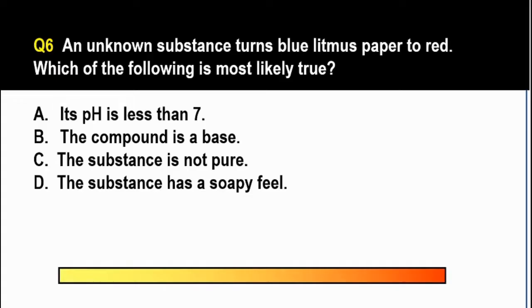Ang tamang sagot dyan ay letter A. Its pH is less than 7. So here we have another question on acids and bases. So siguraduhin nyo talaga na naiintindihan nyo yung concept ng acids and bases. Just remember our mnemonic device which is BRA, B-R-A. So if the substance turns blue litmus paper to red, B2R, then it is an acid. And acids have a pH of less than 7.